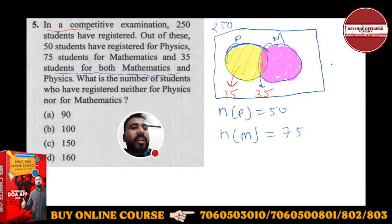Now n of m, this whole m is given to you as 75. This whole m, this whole pink. But this common portion is 35. So I will do 75 minus 35, and I will get here 40.